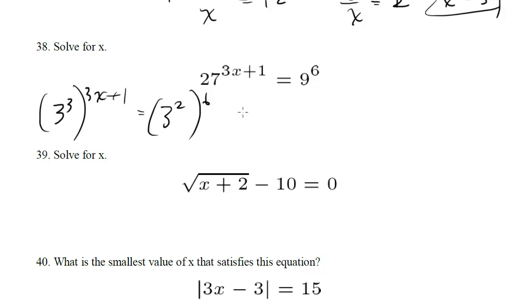Now by our exponent rules we can multiply the exponents. We're going to get 3 to the 9x plus 3 is equal to 3 to the 12. And now since the bases are equal, our exponents must equal each other. So we'll set those equal. We get 9x plus 3 equals 12, 9x is equal to 9 or x is equal to 1, which is your answer.